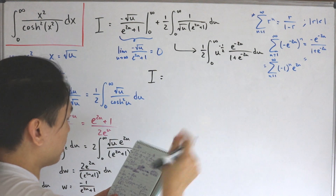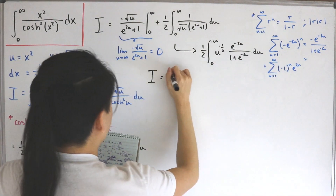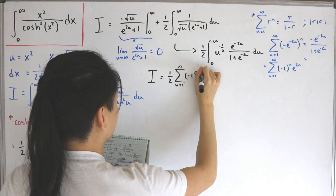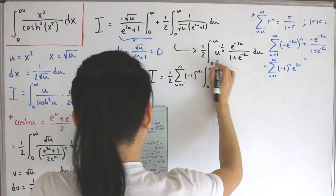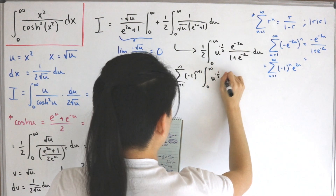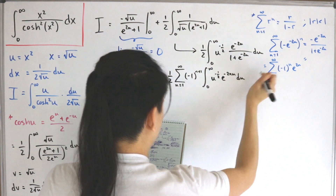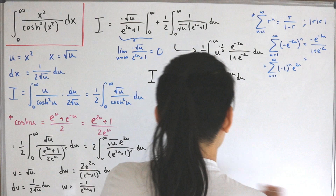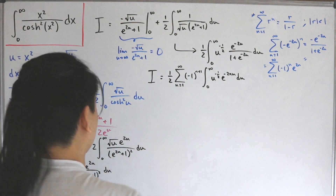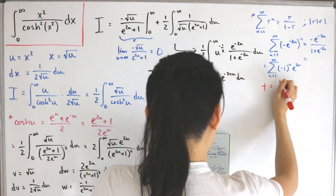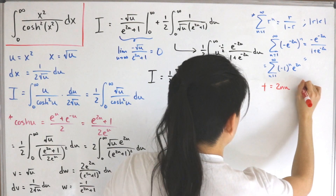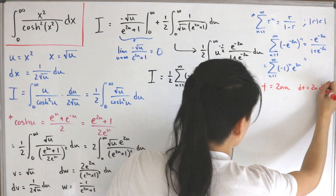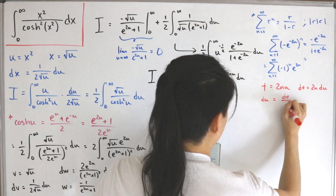We now have one-half times the infinite sum from n=1 of (-1)^(n+1) times the integral from zero to infinity of u^(-1/2) times e^(-2nu) du. We perform another u-substitution, letting t equal 2nu, so dt equals 2n du, meaning du equals dt/(2n) and u equals t/(2n).